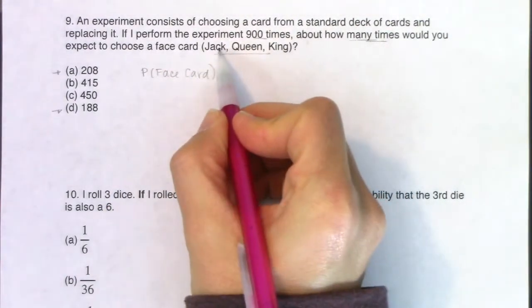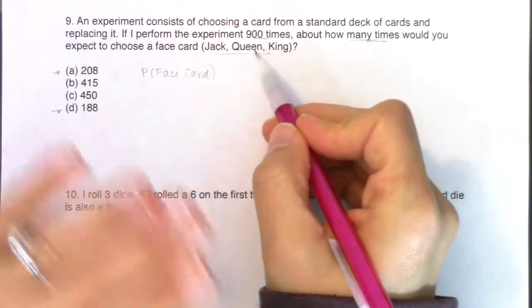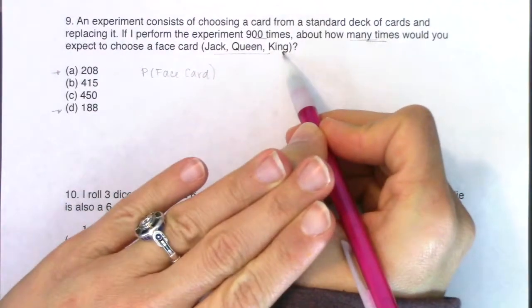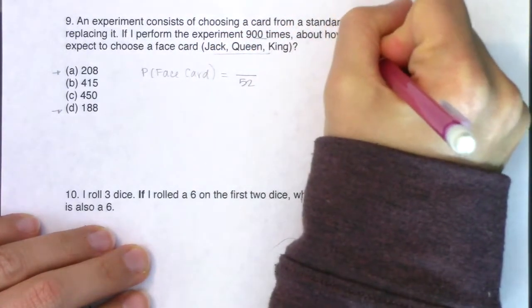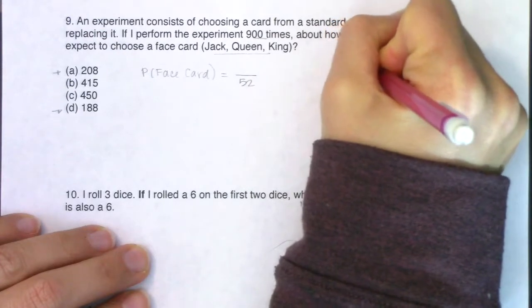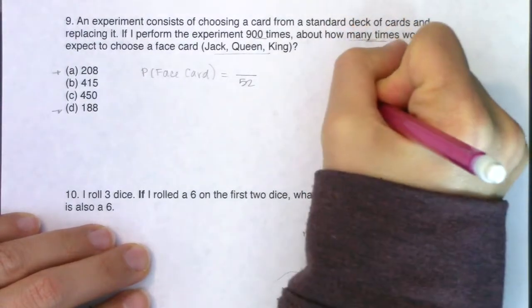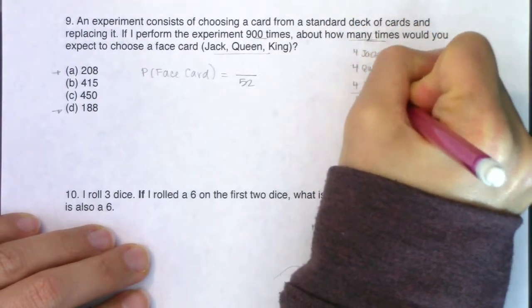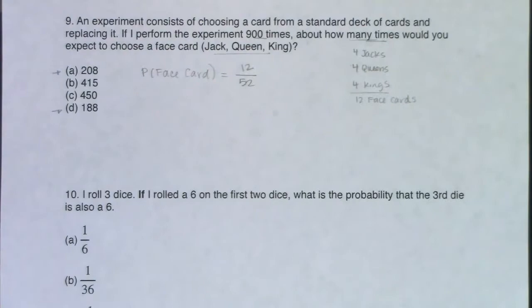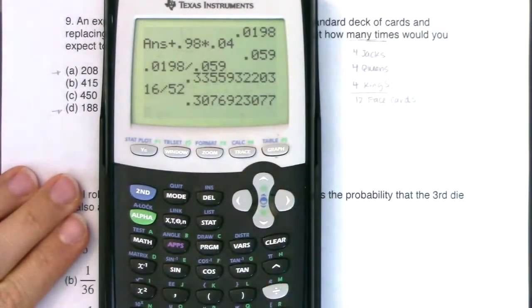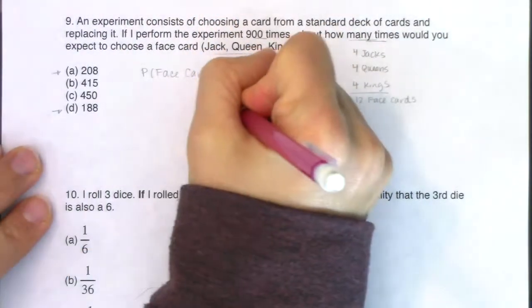So face cards. Let's talk about this. How many jacks are there in a deck of cards? There are four jacks. There are four queens, and there are four kings. So out of my standard deck of 52 cards, we have four jacks, we have four queens, and we have four kings. So I have a total of 12 face cards. So what's the likelihood that I'll get a face card if I just do this experiment once? Well, 12 out of 52. Let's see what that fraction simplifies into. It looks like about 23% of the time I'm going to get a face card.